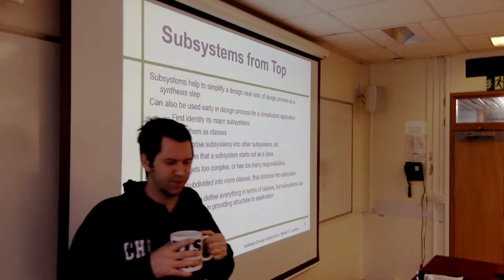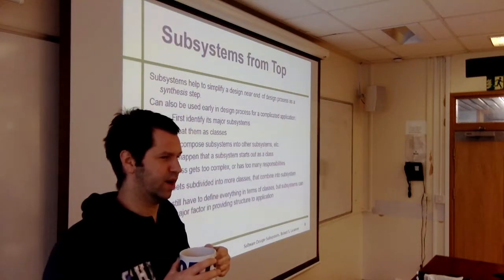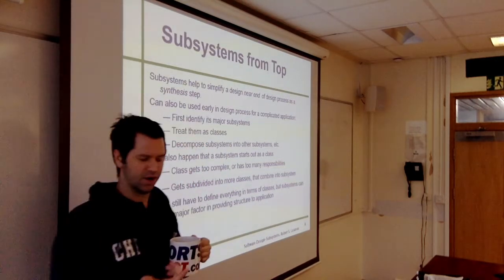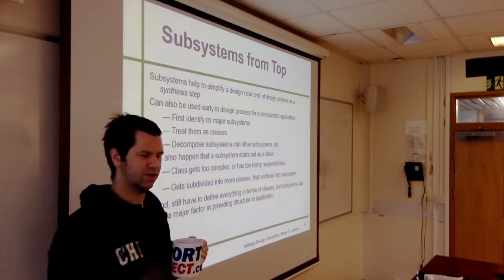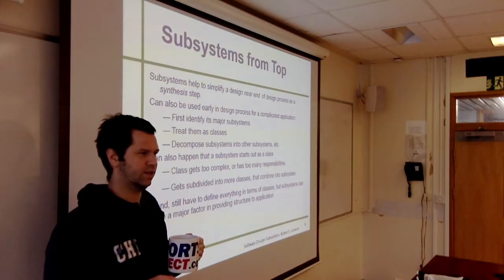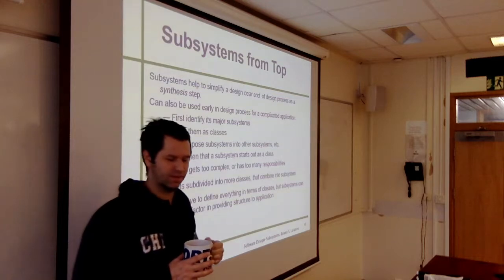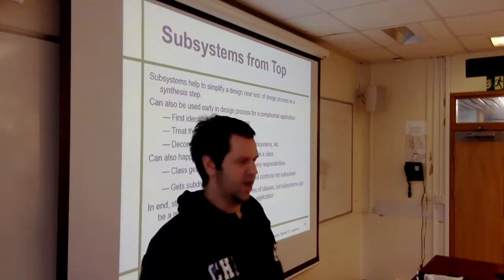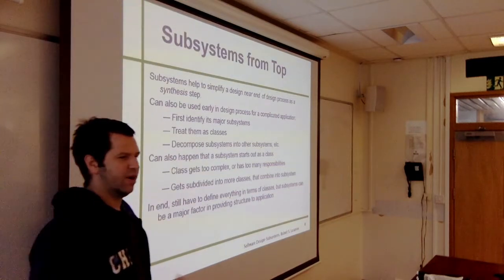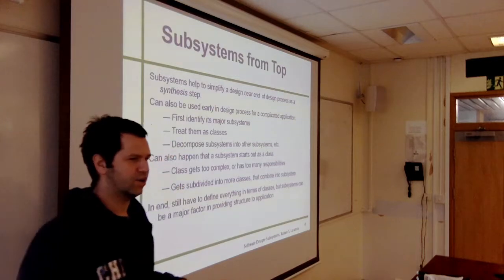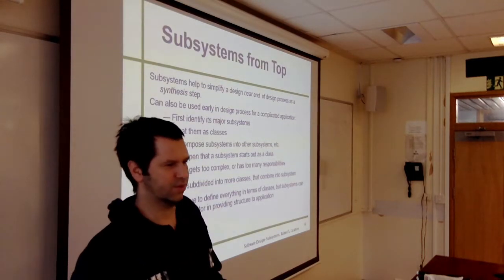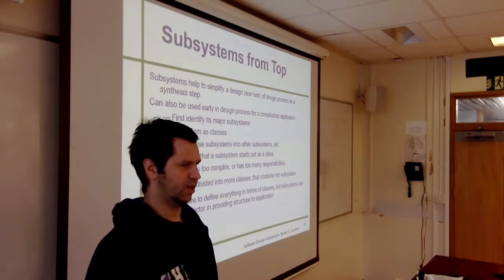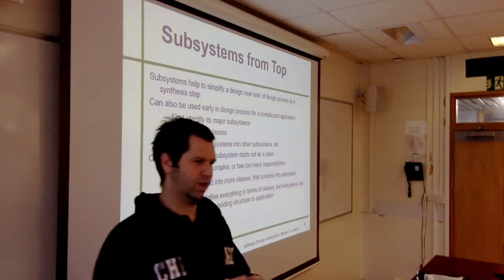Subsystems can help to simplify the design near the end of the design process, which is where we are. We started with object identification, responsibilities identification, collaborations, hierarchies, and now subsystems — this is really the end of the design phase. Sometimes people identify subsystems at the very beginning and use a divide-and-conquer approach. We did the opposite: we identified objects first, then responsibilities, and then grouped those objects into subsystems and hierarchies. But it could go in the opposite direction.